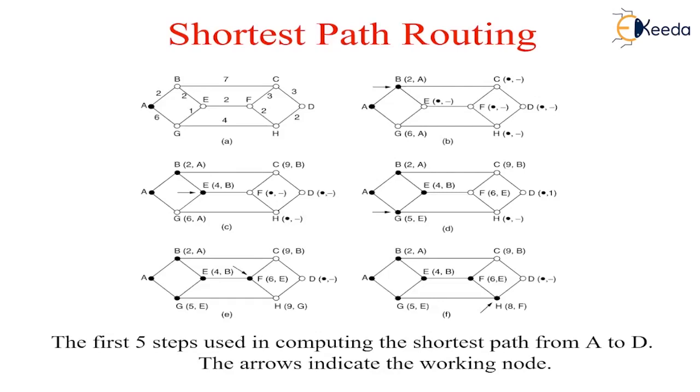We now start at B and examine all nodes adjacent to it. If the sum of the label on B and the distance from B to the node being considered is less than the label on that node, we have a shorter path so the node is relabeled. After all nodes adjacent to the working node have been inspected and the tentative labels changed if possible, the entire graph is searched for the tentatively labeled node with the smallest value. This node is made permanent and becomes the working node for the next round. The figure shows the five steps of the algorithm. By using these five steps, we can find out the shortest path from source A to destination D.